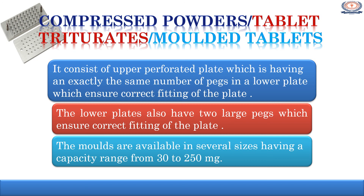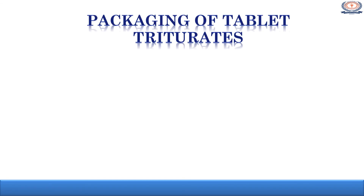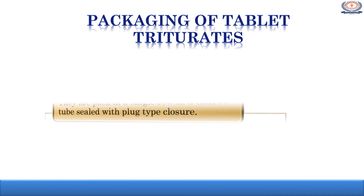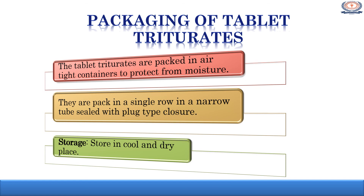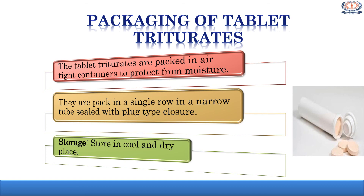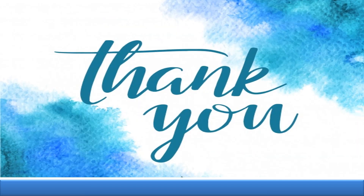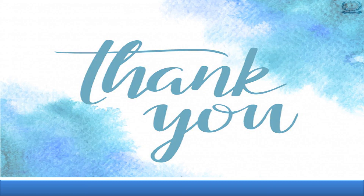Nowadays, automatic triturate machines are available which can prepare 2,500 tablet triturates per week. Tablet triturates are packed in airtight containers to protect from moisture. It is better to pack them in a single row in a narrow tube sealed with a plug tight closure. Tablet triturates are stored in a cool and dry place. Here you can see an example of the packing of tablet triturates. So this is about solid dosage forms. Till now we have discussed the definition of powders, advantages and disadvantages of powders, and the classification of powders with detailed discussion of various classes. Thank you very much for watching this video.